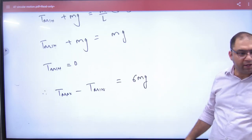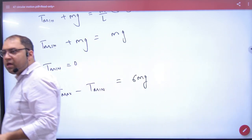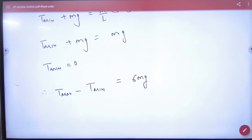So what will be the difference? The difference is 6mg. This will come in the objective: what is the difference between Tmax and Tmin in the case of minimum velocity? The answer is 6mg.